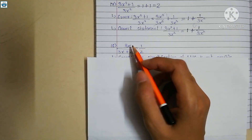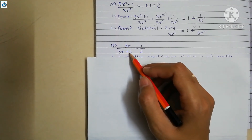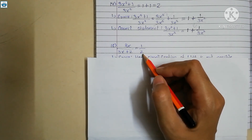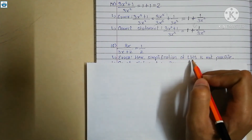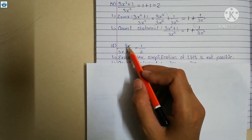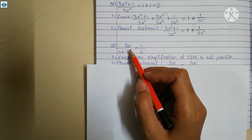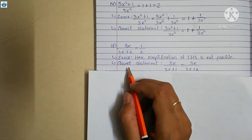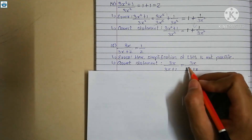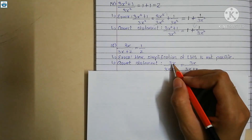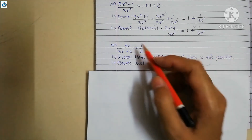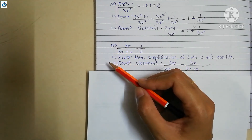Statement 18 is 3x upon 3x plus 2 equals 1 upon 2. Here the error is that simplification of the left hand side is not possible, because 3x and 3x plus 2 cannot cancel. The correct statement is: 3x upon 3x plus 2 remains as 3x upon 3x plus 2 — it cannot be simplified further.